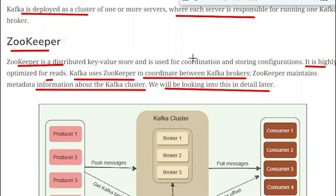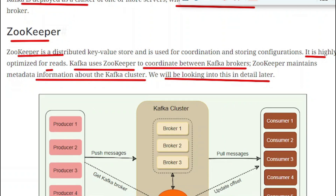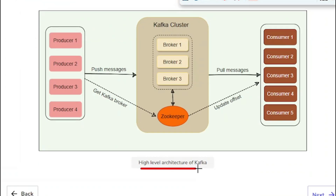When a message is sent from the producer, it is stored in one of the Kafka brokers in the Kafka cluster. Information about which broker stored that message and related details is stored in Zookeeper — we will cover this in more detail later. Looking at the high-level architecture diagram, there are multiple producers publishing messages to the Kafka cluster. There are three brokers in the cluster, and Zookeeper is always connected to the cluster.